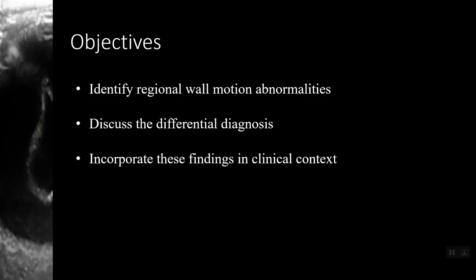We will also discuss the differential diagnosis of regional wall motion abnormalities with a few visual examples, and we will briefly touch on some of the other cardiac ultrasound findings that you may see when looking for regional wall motion abnormalities. Ultimately, the findings of your ultrasound will need to be incorporated into the clinical context along with ECG and lab work.